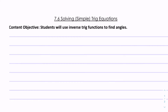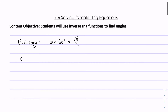In a previous lesson, we were evaluating trig equations. I would give you, say, sine of 60 degrees, and you'd find the answer is radical 3 over 2. What we're going to be doing in this lesson is go backwards. This time, for solving, I'll give you the answer and ask you to tell me the angle that makes that answer true. So what angle gives sine — y over r — equal to radical 3 over 2? That's what solving is all about.